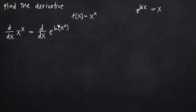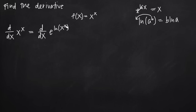From here it starts to get interesting. We can manipulate the right-hand side using the log property: the natural log of a quantity a raised to the power b equals b times the natural log of a. In other words, we can take the exponent and bring it down in front as a coefficient. So natural log of x to the x becomes x times natural log of x, giving us d/dx of e raised to the power of x times natural log of x.